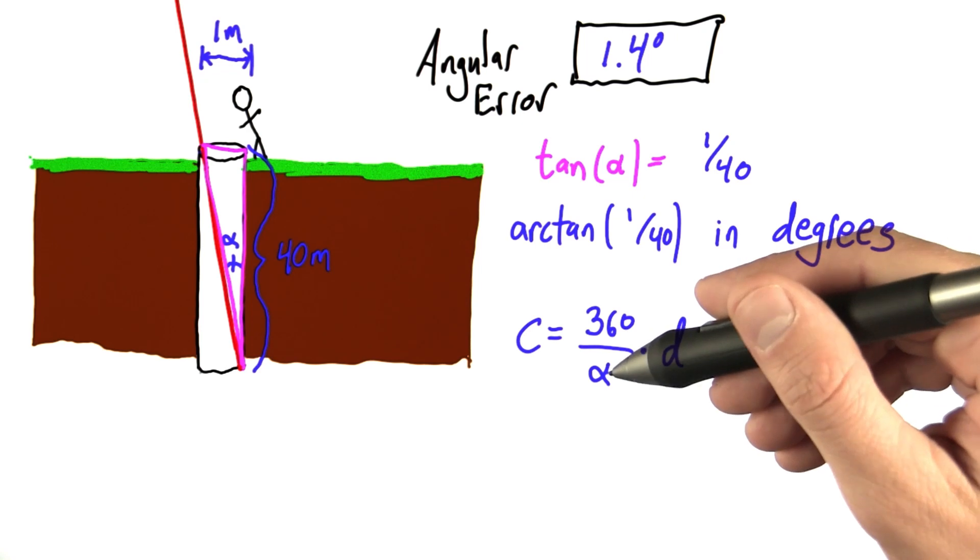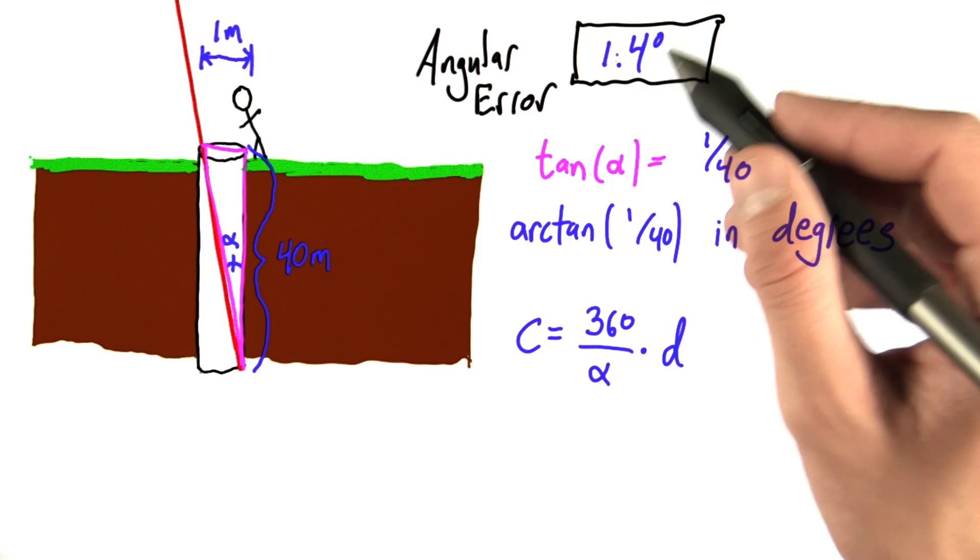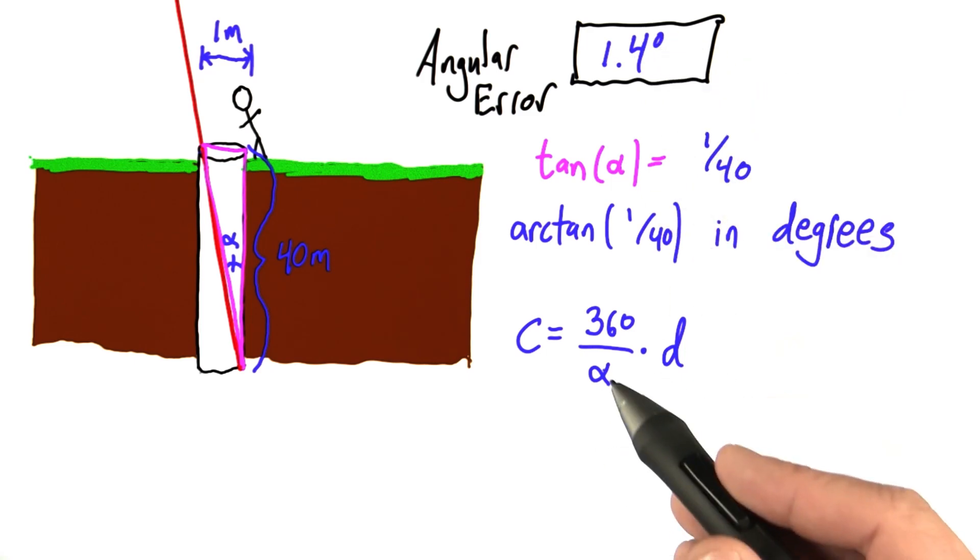Now, this alpha isn't exactly the same as this alpha over here, but it turns out that an error here results in a corresponding error here.